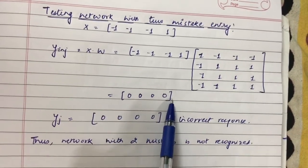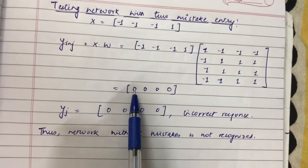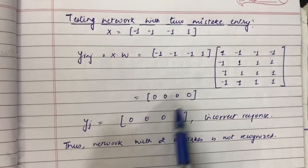We will calculate the output by multiplying this test input vector with the weight matrix. We will get [0, 0, 0, 0], and after applying the activation function, the result is [0, 0, 0, 0].